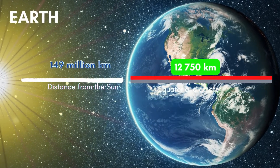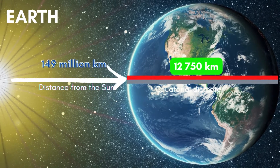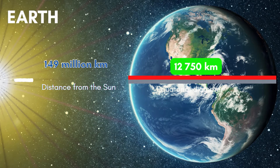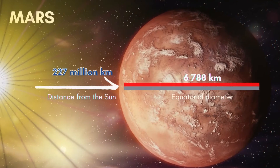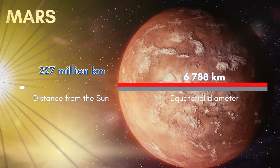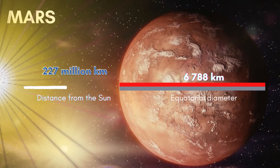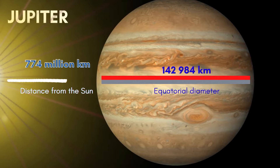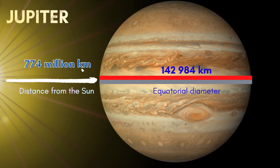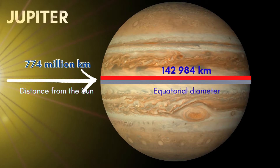The third one is our very own Earth. Earth has a distance of 149 million kilometers from the sun and a planet size of 12,750 kilometers. This is our very own Earth. The fourth one is Mars, with 227 million kilometers distance from the sun and an equatorial diameter of 6,788 kilometers. This is the fourth planet, Mars.